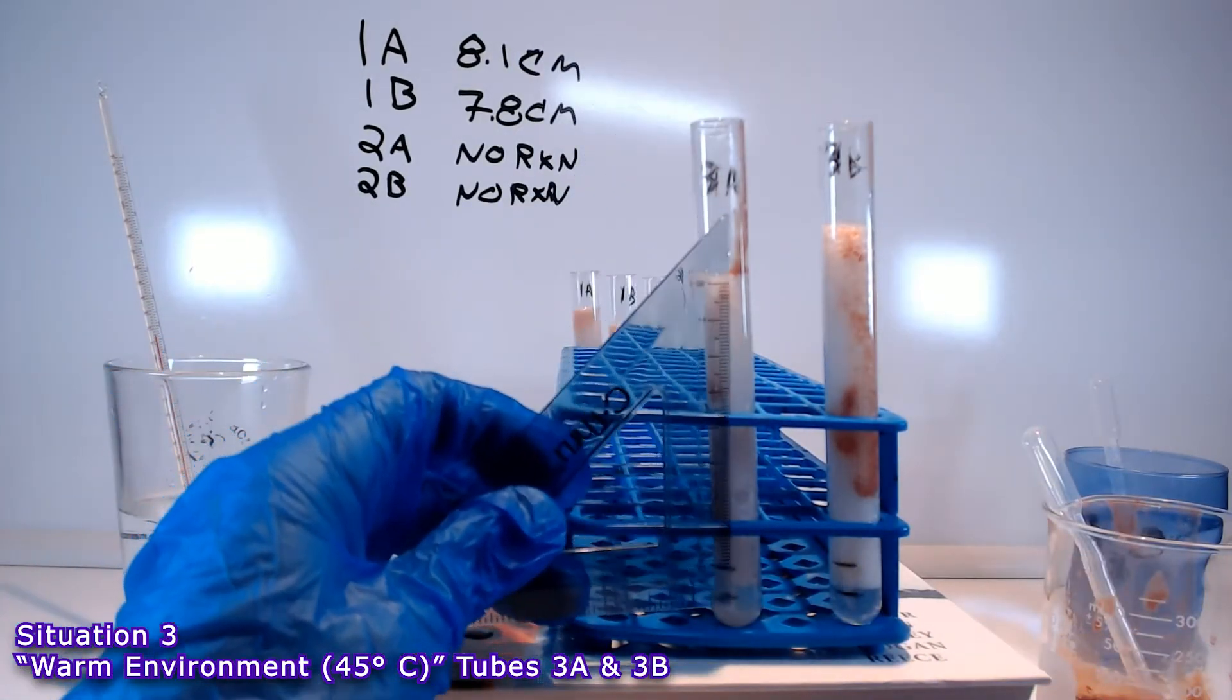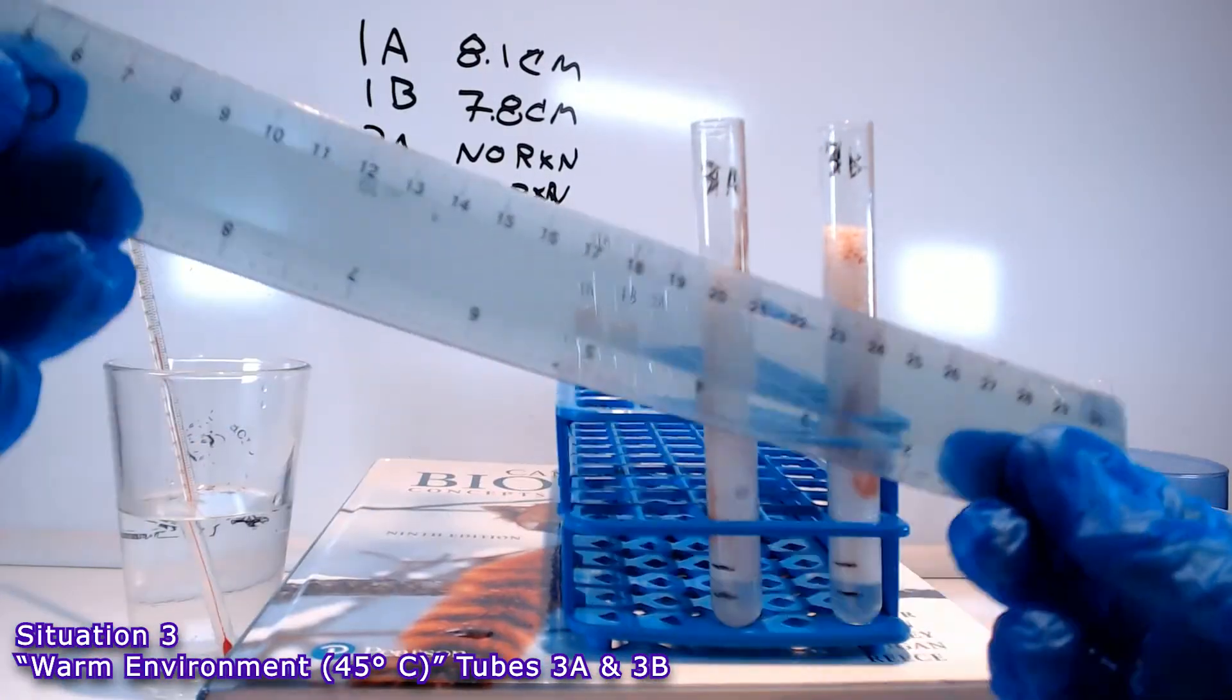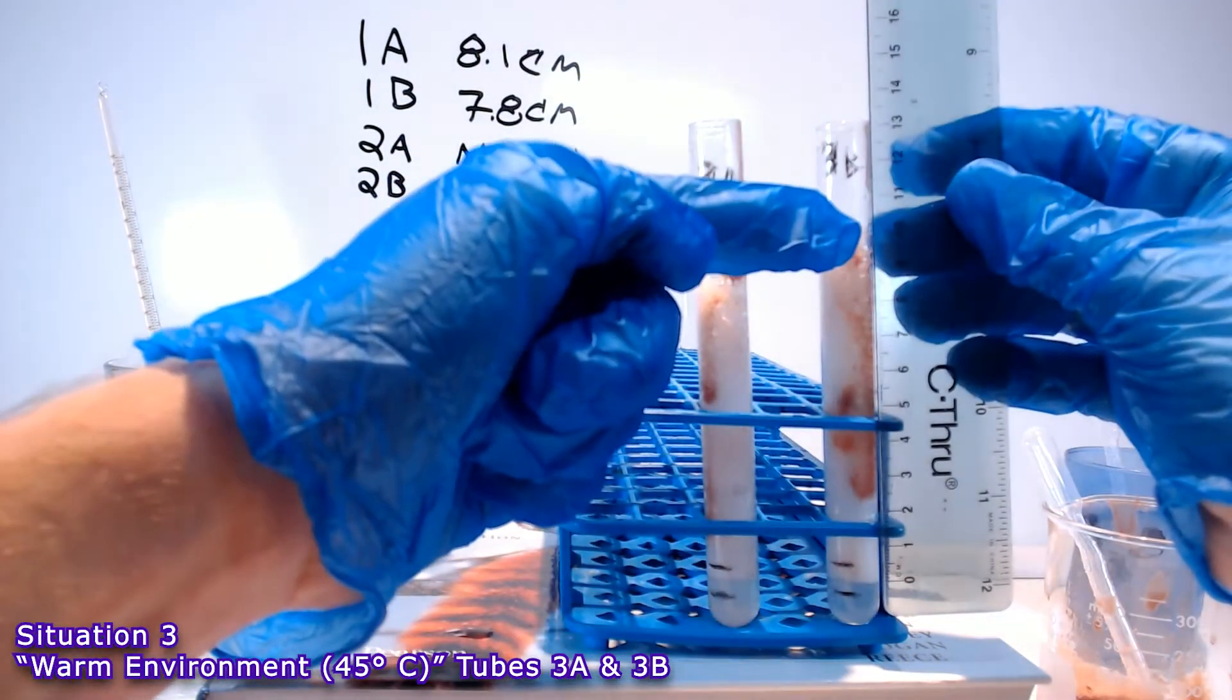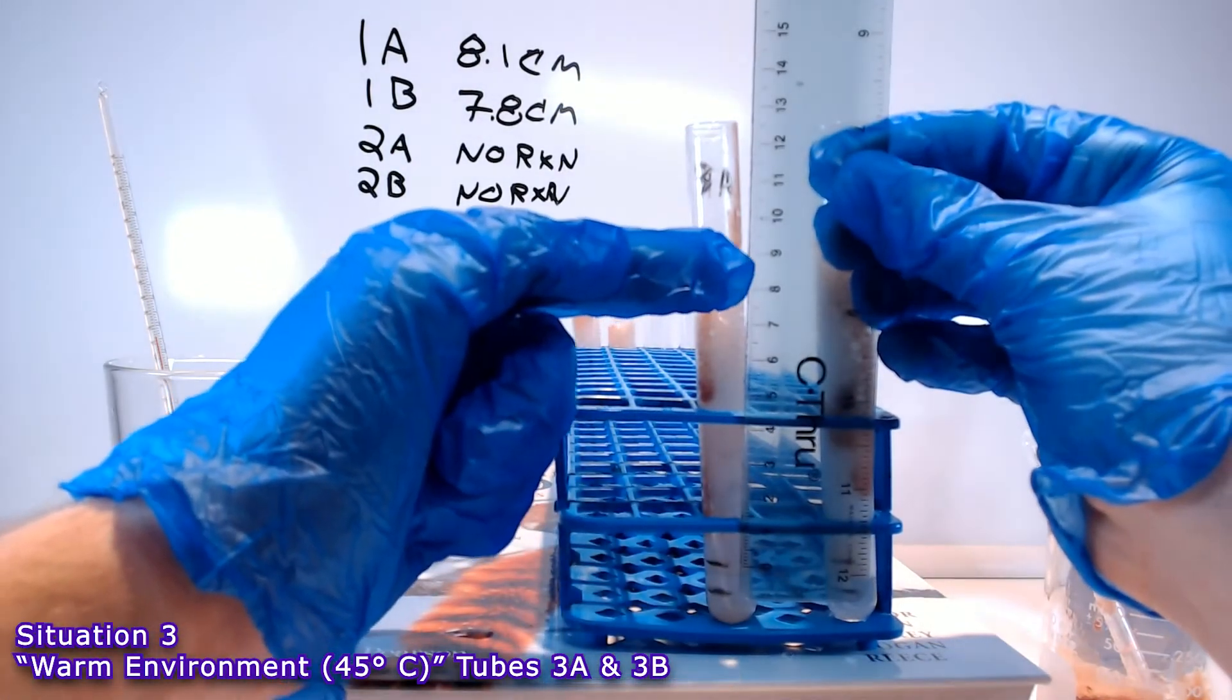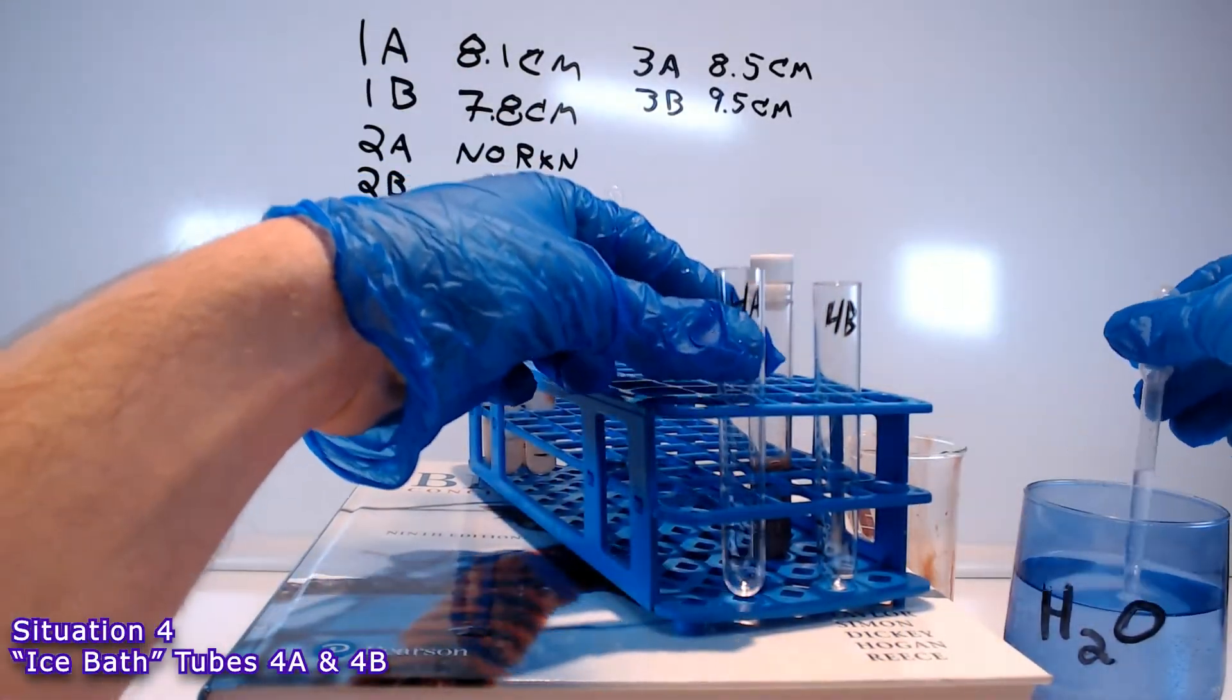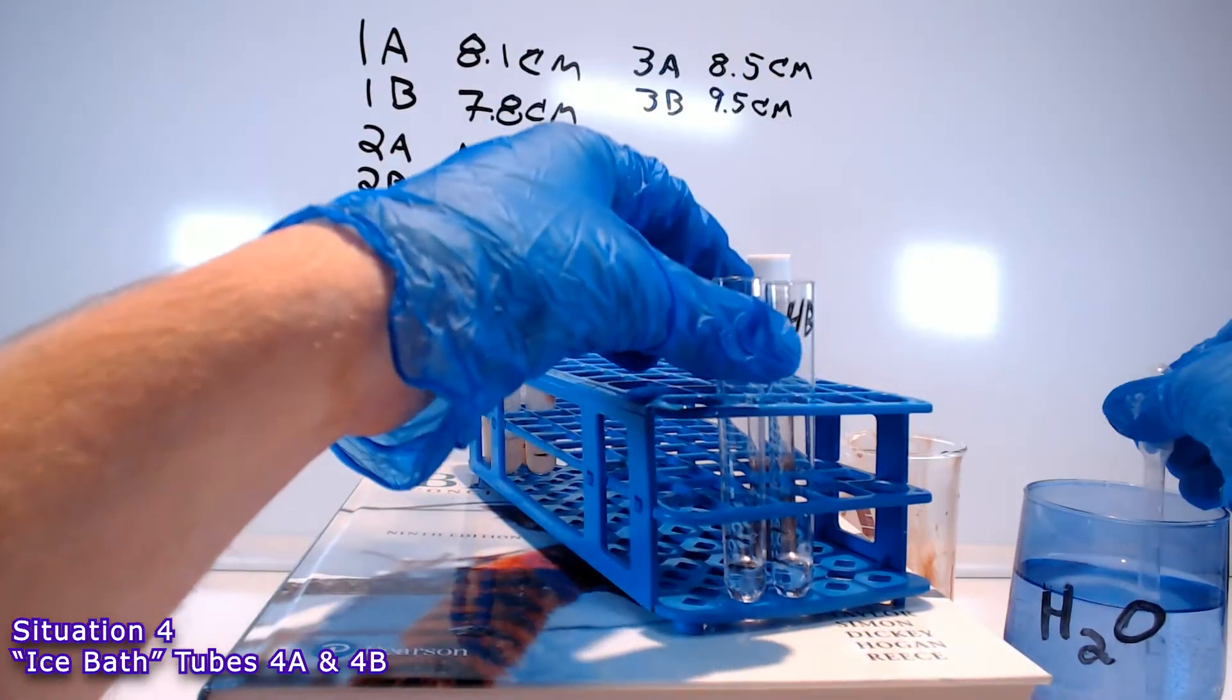And in fact, it's so many bubbles that this tiny little ruler that I had is no good. I'm measuring from the 2 centimeter line that was the top up to the top of the column of bubbles there, not from the bottom of the tube. So, at the end, it turned out that in the warm environment, we got 8.5 centimeters for tube 3A and 9.5 centimeters for tube 3B.